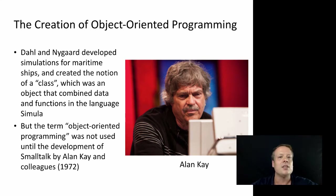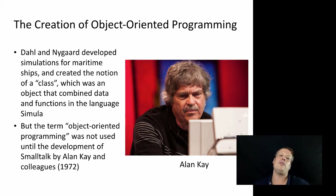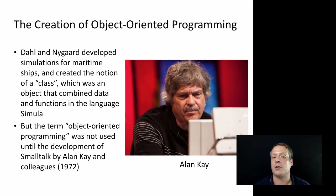This was done in a language developed for this purpose called Simula — short for Simulation. I always find it interesting that the original use of object-oriented programming was for simulations, and we're going to talk about how that eventually leads to some of the notions we take for granted in agent-based modeling. Even at that time, though, the term 'object-oriented programming' as we use it today was not used — it wasn't used until the development of Smalltalk by Alan Kay and colleagues in 1972.